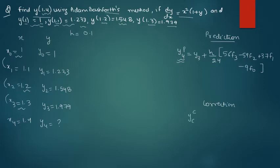And when it comes to correction, then the formula is once you will find out the value of y4 prediction, then y4 correction will be y3 plus h by 24. This is same but now it comes f prediction 4 plus 19f3 minus 5f2 plus f1. This is the formula. These two formulas you need to use.